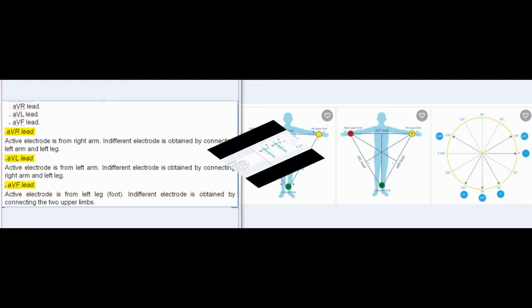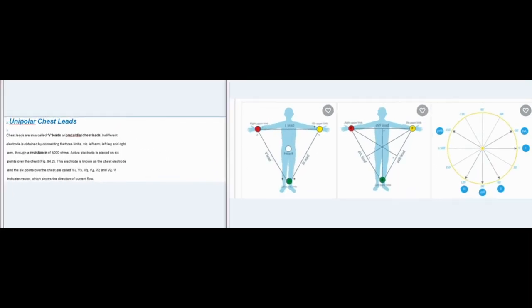Unipolar Chest Leads: Chest leads are also called V-leads or precordial chest leads. The indifferent electrode is obtained by connecting the three limbs — left arm, left leg, and right arm — through a resistance of 5000 ohms. The active electrode is placed on six points over the chest. This electrode is known as the chest electrode, and the six points are called V1, V2, V3, V4, V5, and V6. V indicates vector, which shows the direction of current flow.